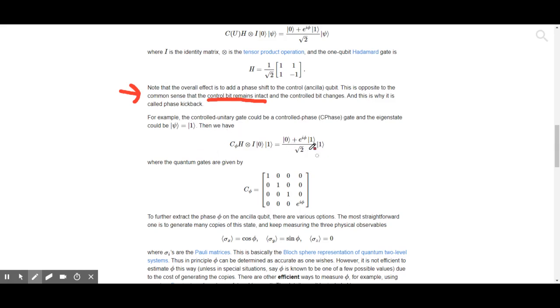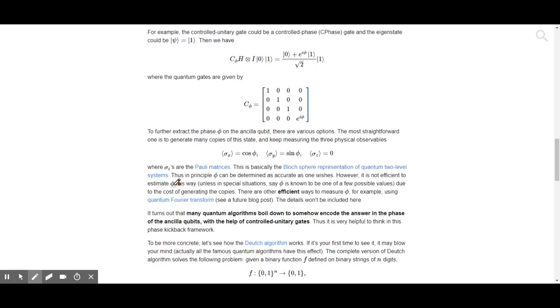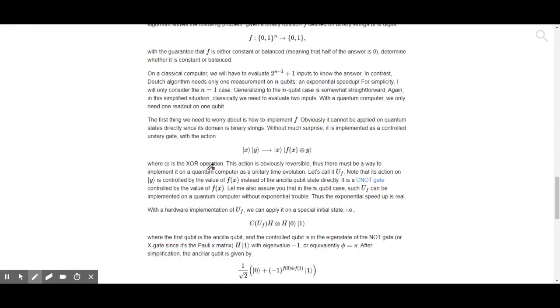So now this is already, how do you extract the phase? The most straightforward one is to generate many copies of this state and keep measuring the three physical observables. That's a bit abstract. Let's see what the video says here.